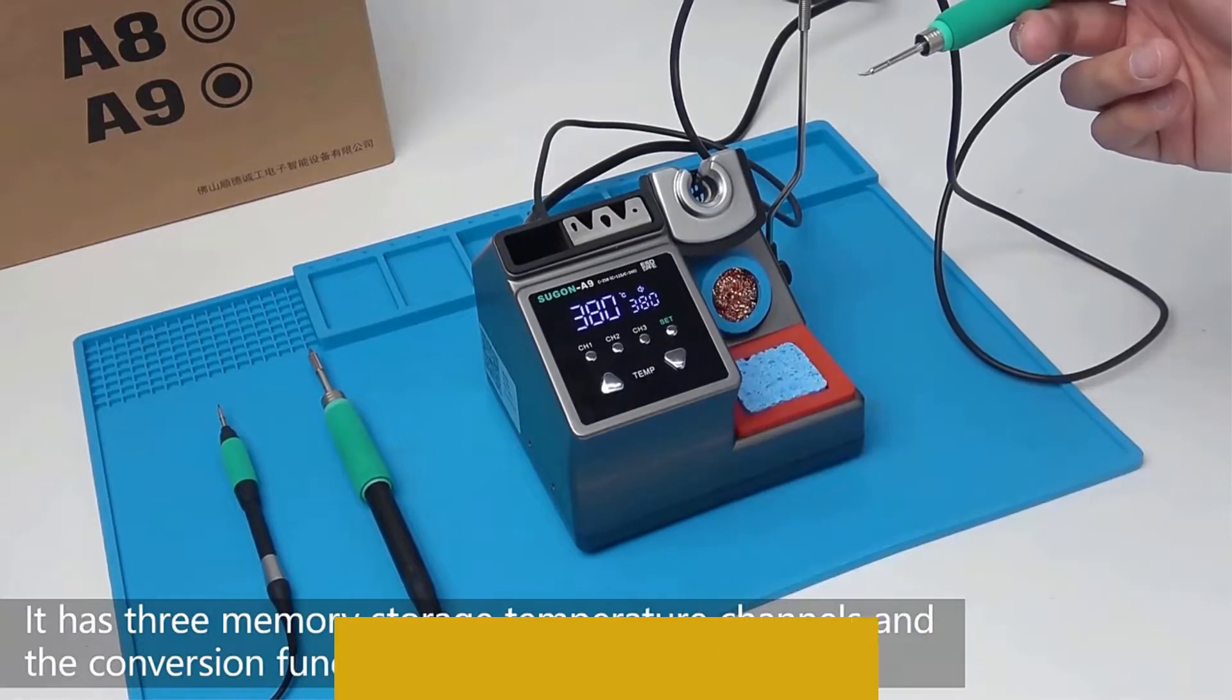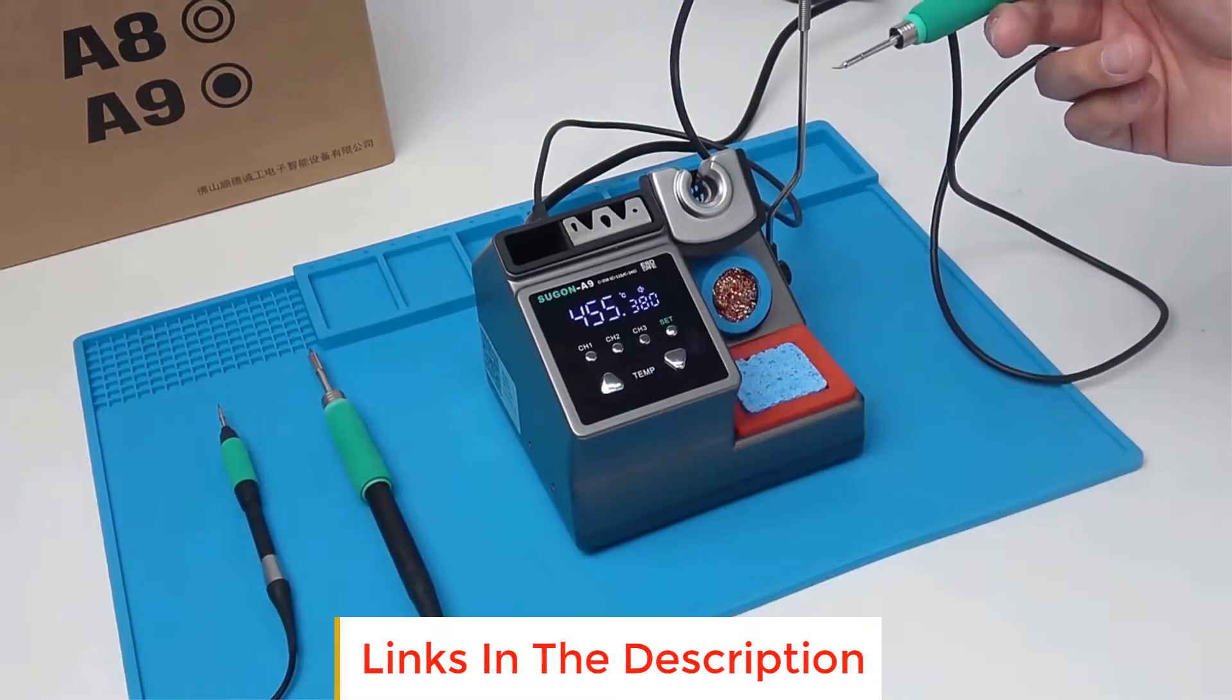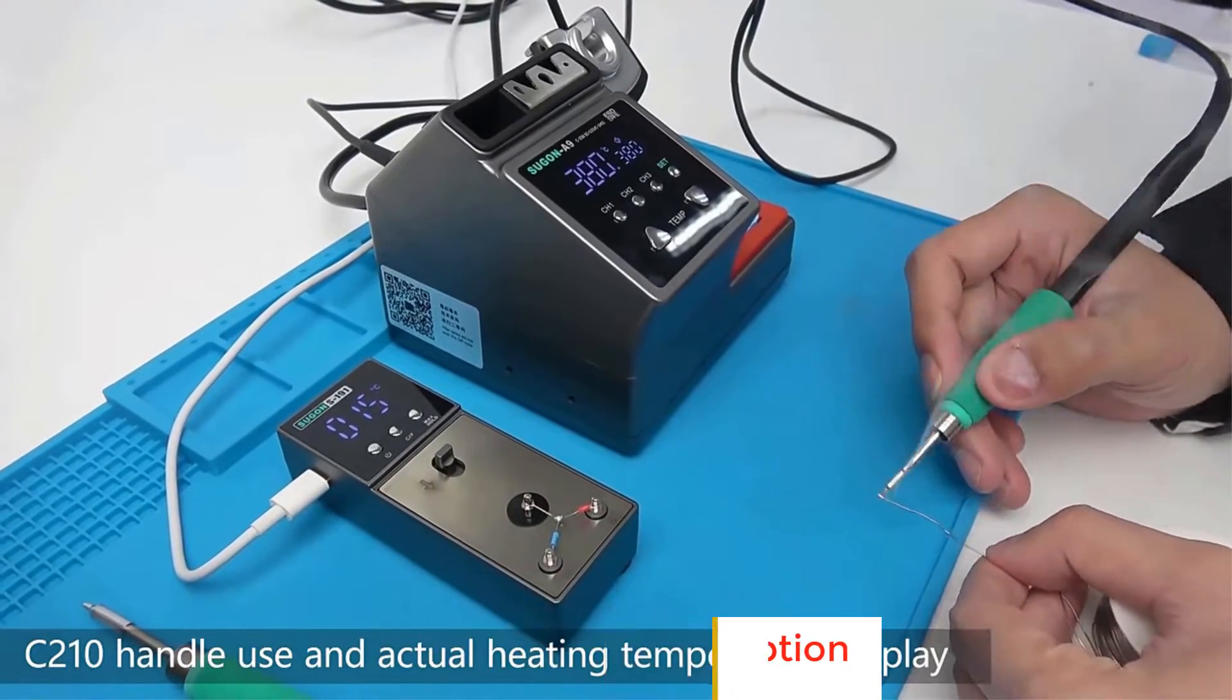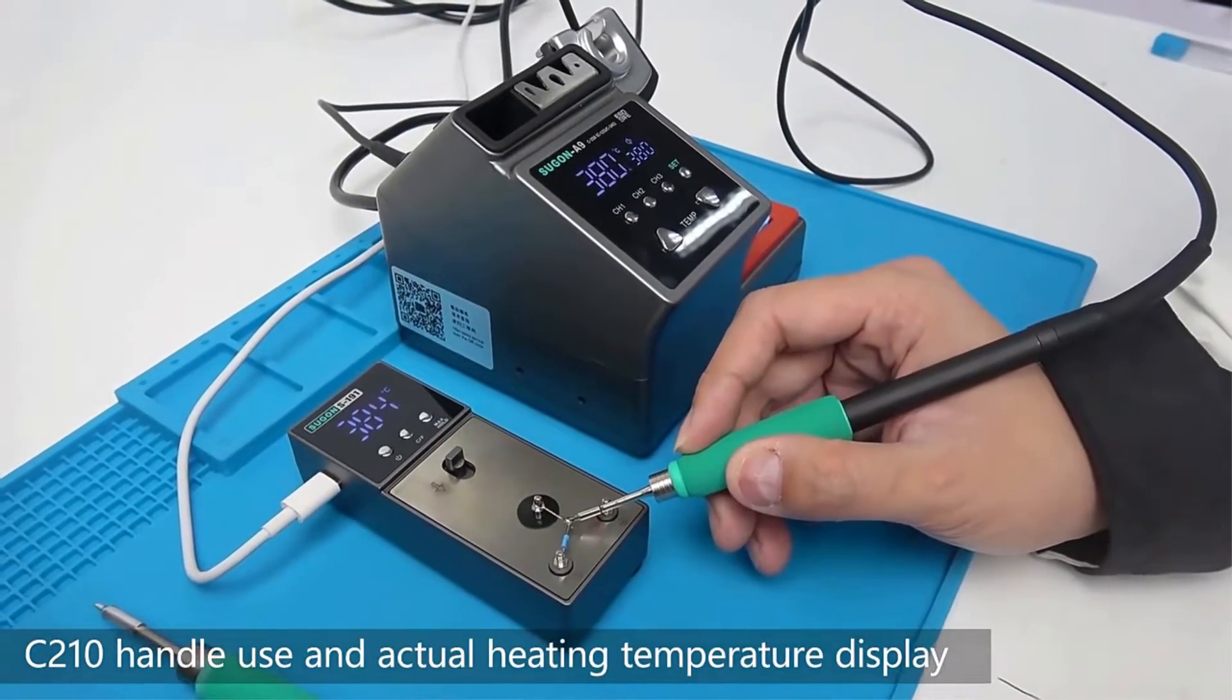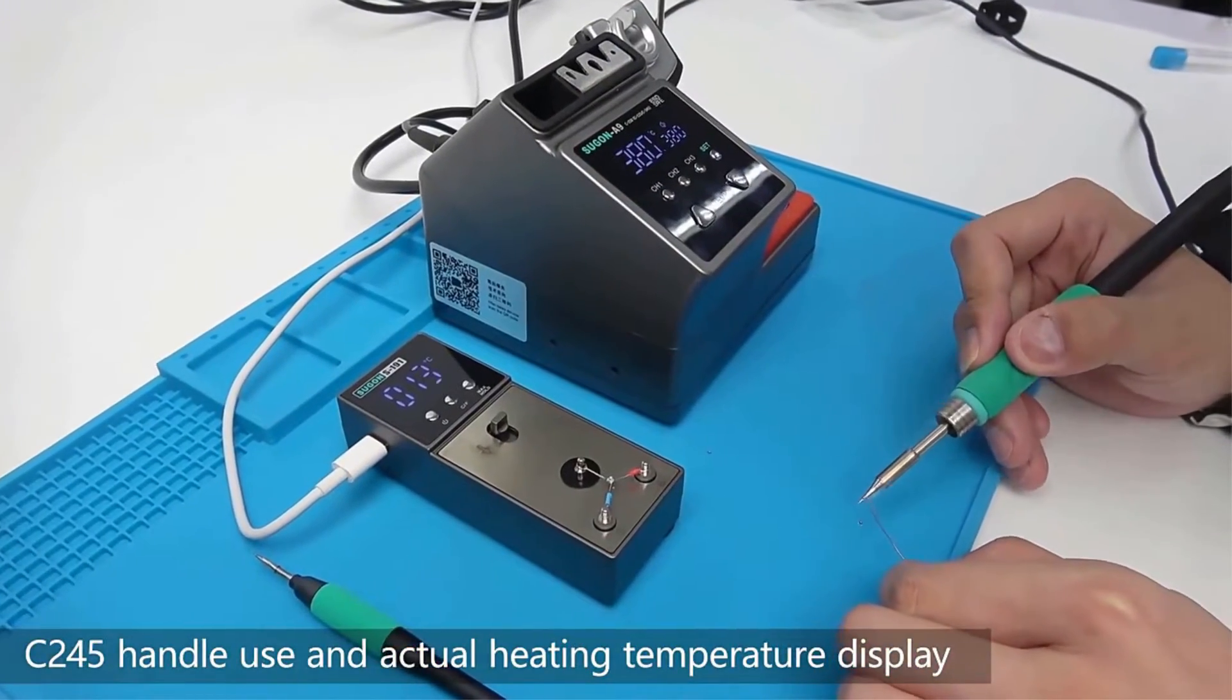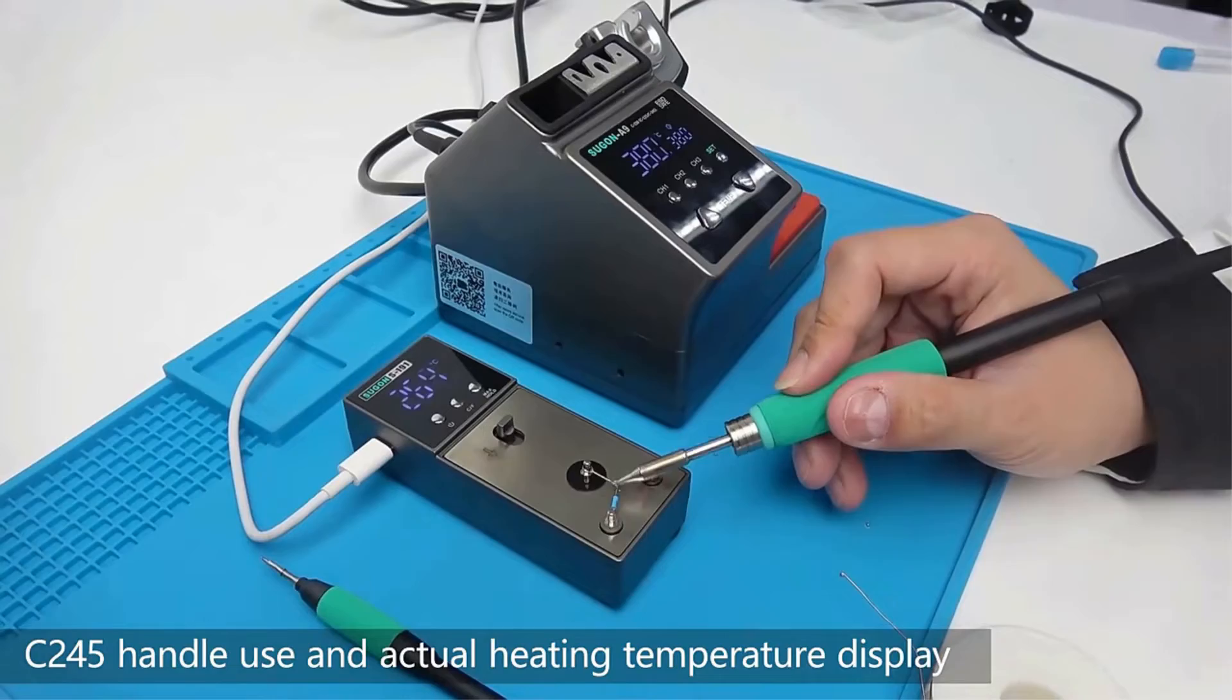The station features a smart display, tips stand, cleaning sponge, tip cleaner and control buttons. You can adjust the temperature, set up the short circuit protection and convert Celsius degrees to Fahrenheit. As for the cons, they are quite obvious.